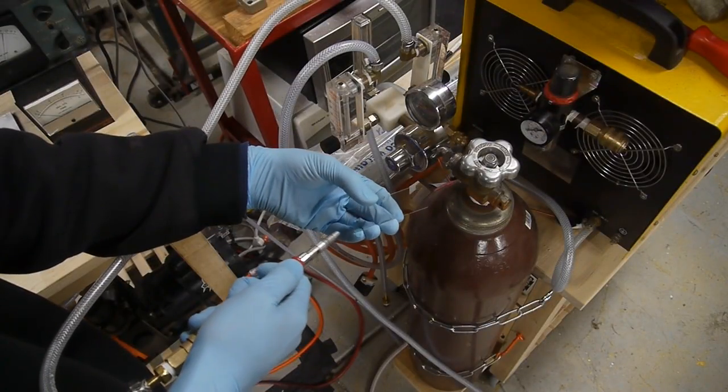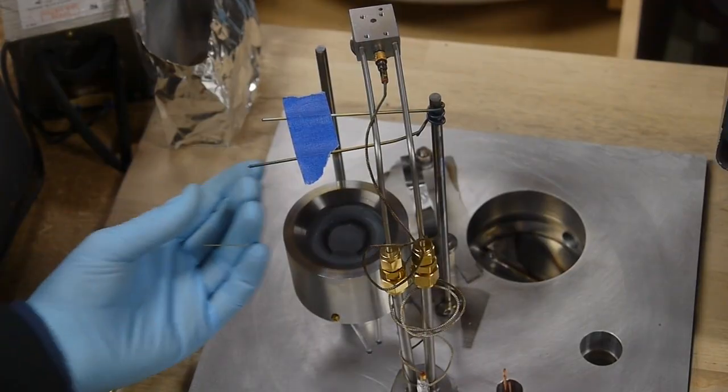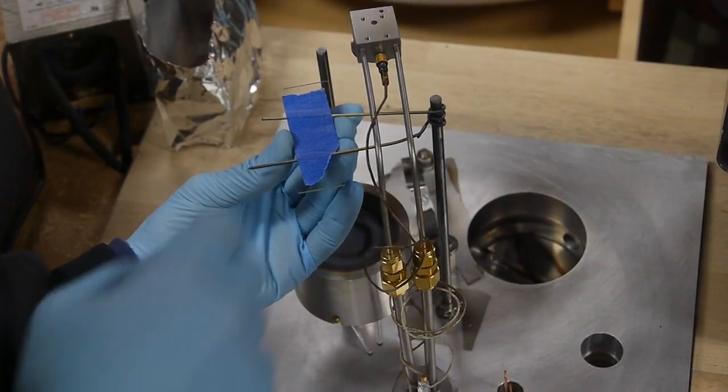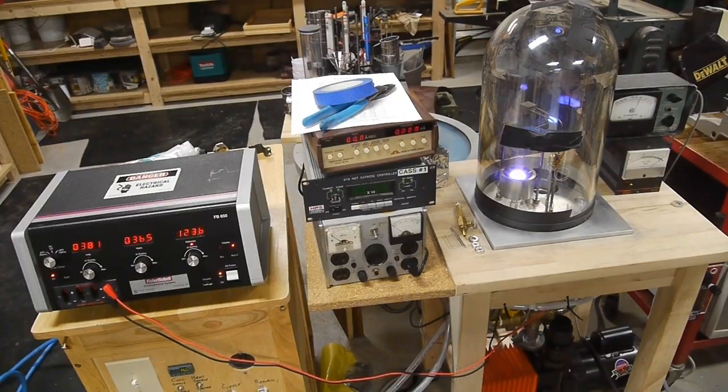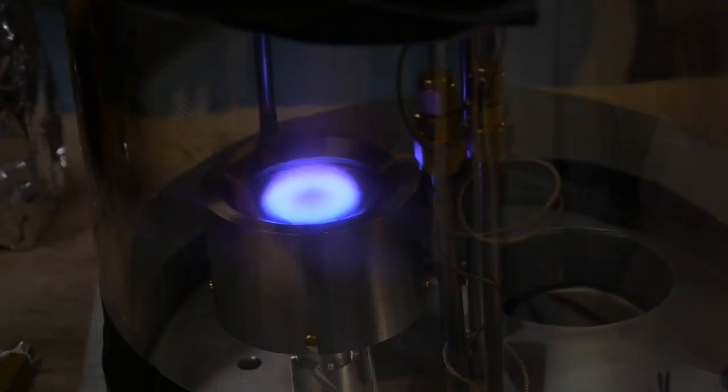Next, I blow the slides dry with argon, and then load them into a vacuum chamber. This chamber is set up to deposit a conductive coating on the slides that's clear, and it does this through a process called sputtering.